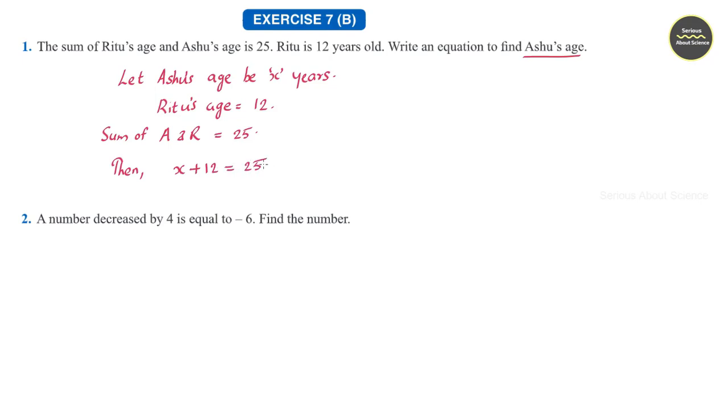Now, applying transposition method, that is taking this 12 to RHS, we can write H is equal to 25 minus 12, or that is equal to 13. Therefore, Ashur's age is equal to 13 years.